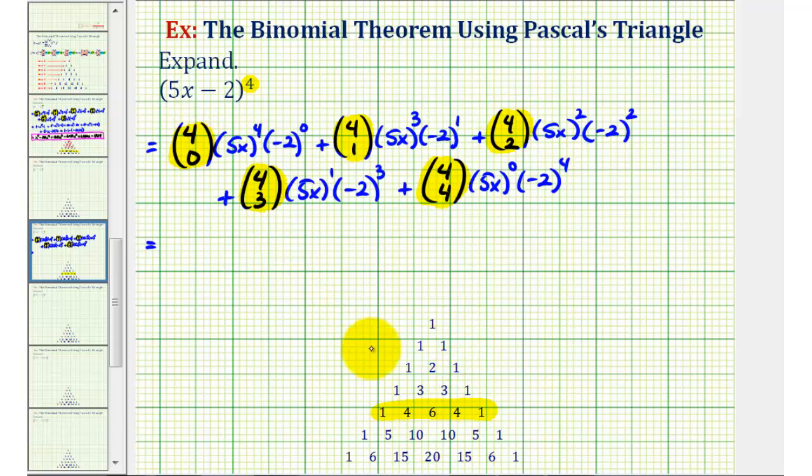So again, 4 choose 0 is equal to 1, so we'll have 1 times 5x to the 4th. Well, 5 to the 4th is equal to 625, so we'll have 625x to the 4th. Negative 2 to the 0 is equal to 1.